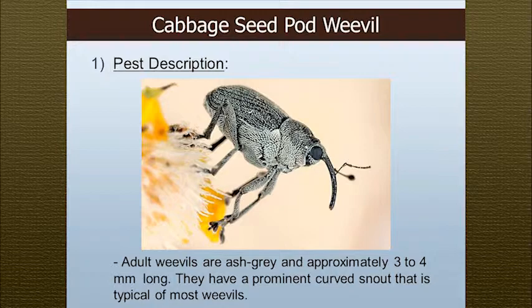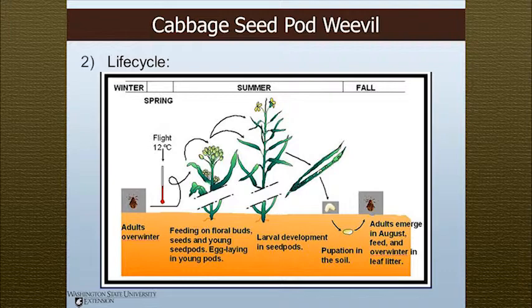The lifecycle: adults will emerge in the spring, and once it warms up they'll take flight. They will find the buds of your canola plants where they will start to feed, and then as the pods start to develop, mated females will lay eggs inside those seed pods and the larvae will hatch, feeding on the developing seeds. After a time they will exit the pod, drop down into the soil where they will pupate, and then emerge as an adult in the fall.